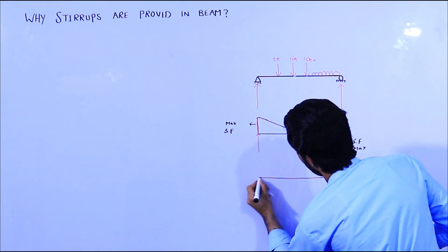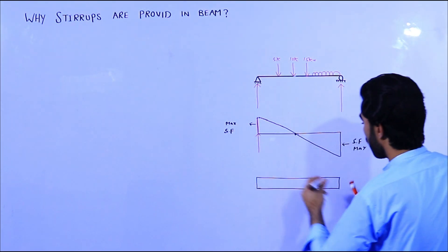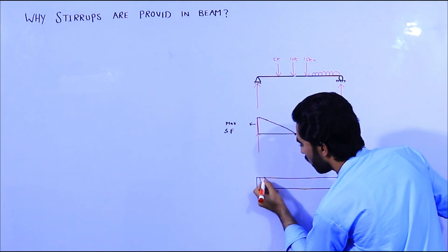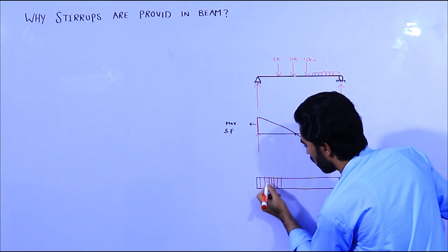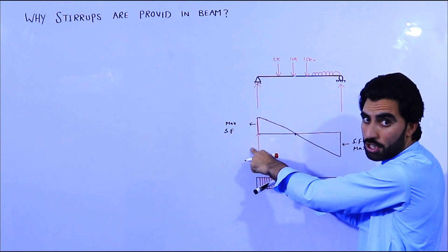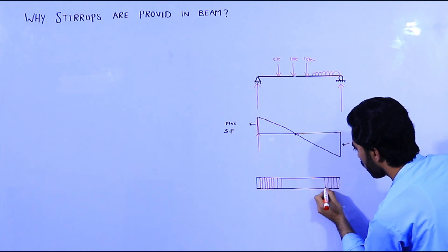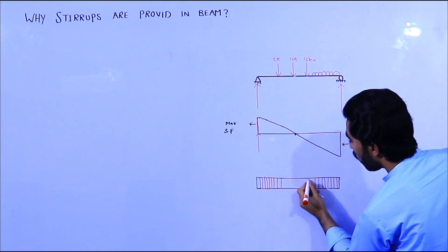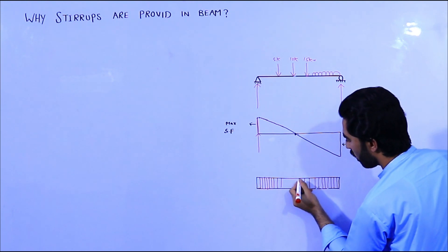Now, when you make a beam, you can see the stirrups should be provided with close spacing at the ends near the supports, because there are more shear stresses at the end and at the support. At the midpoint, since shear force is zero, the spacing should be more - maximum spacing at the mid.